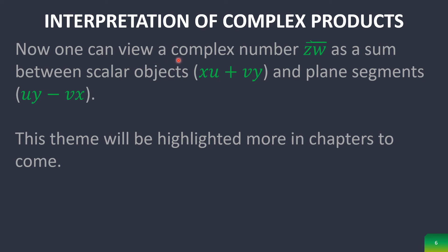So basically, interpreting them, we can now view a product as a sum between a scalar object and a plane segment, which you will see this theme be highlighted significantly during the following chapters in geometric algebra. That's one of the main focuses, which is to have a unified way to sum all different types of objects within the same algebra.